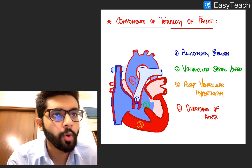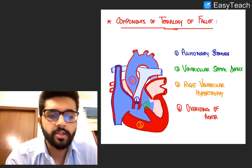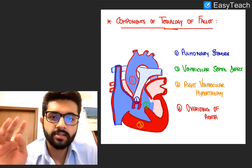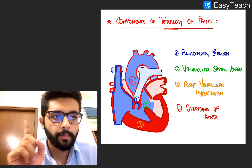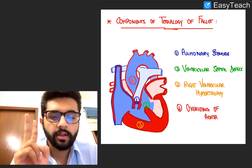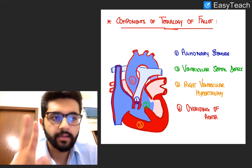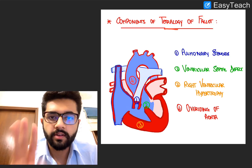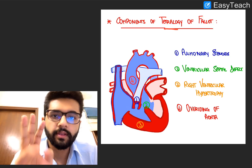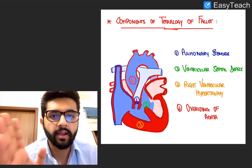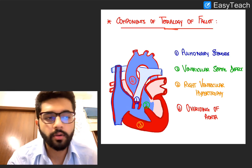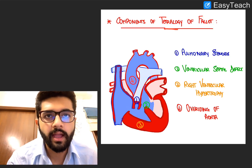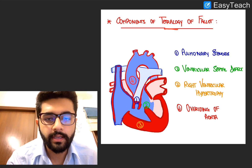So first, let's talk about TOF. As the name suggests, it has four components: Pulmonary Stenosis, Ventricular Septal Defect, Right Ventricular Hypertrophy, and Overriding of Aorta. Knowing these four components is very important — this is a very, very high yield topic.